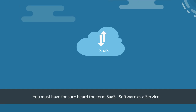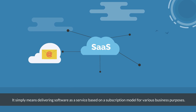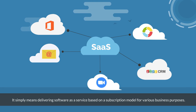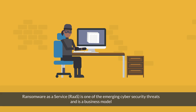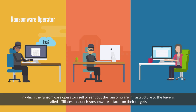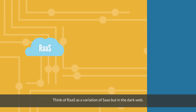You must have heard the term SaaS — software as a service — which simply means delivering software as a service based on a subscription model for various business purposes. So what is RaaS? Ransomware as a service is one of the emerging cybersecurity threats and is a business model in which ransomware operators sell or rent out the ransomware infrastructure to buyers called affiliates to launch ransomware attacks on their targets.